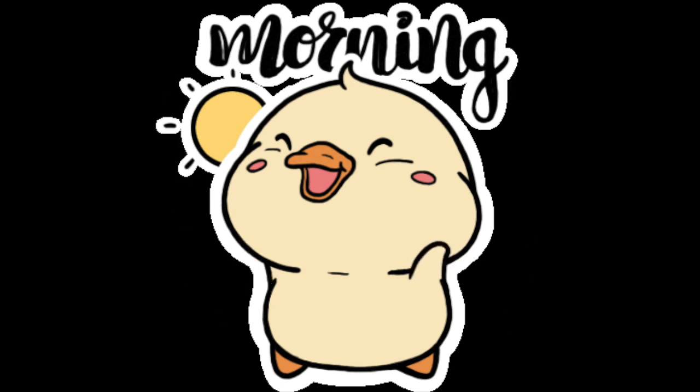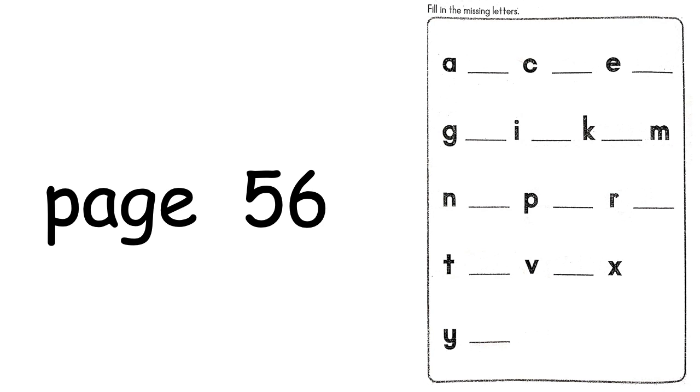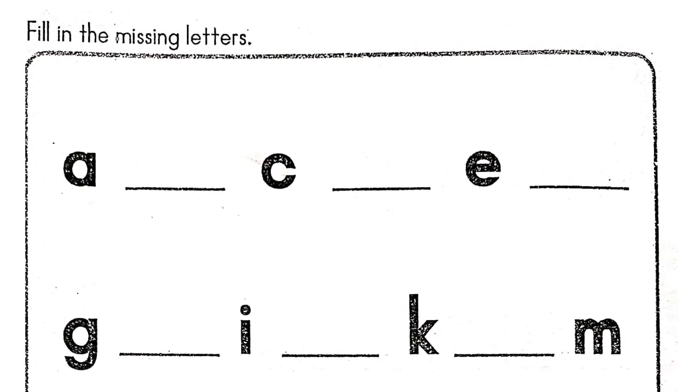Good morning, children. Today we are going to continue our English Yellow Book. Turn to the last page of the book, page 56. Fill in the missing letters. Do you know your alphabet? Let's do it now.